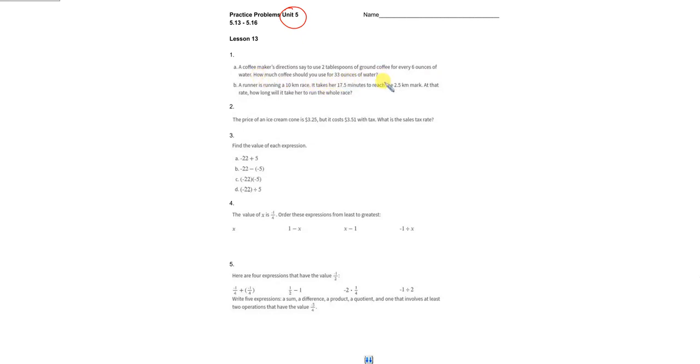How much coffee should we use for 33 ounces of water? This is a straight-up proportional relationship. Coffee versus water - you need two tablespoons for every six ounces. That gives you a proportional relationship with a constant of three. If you have 33 ounces of water, you divide by three, and that's 11.